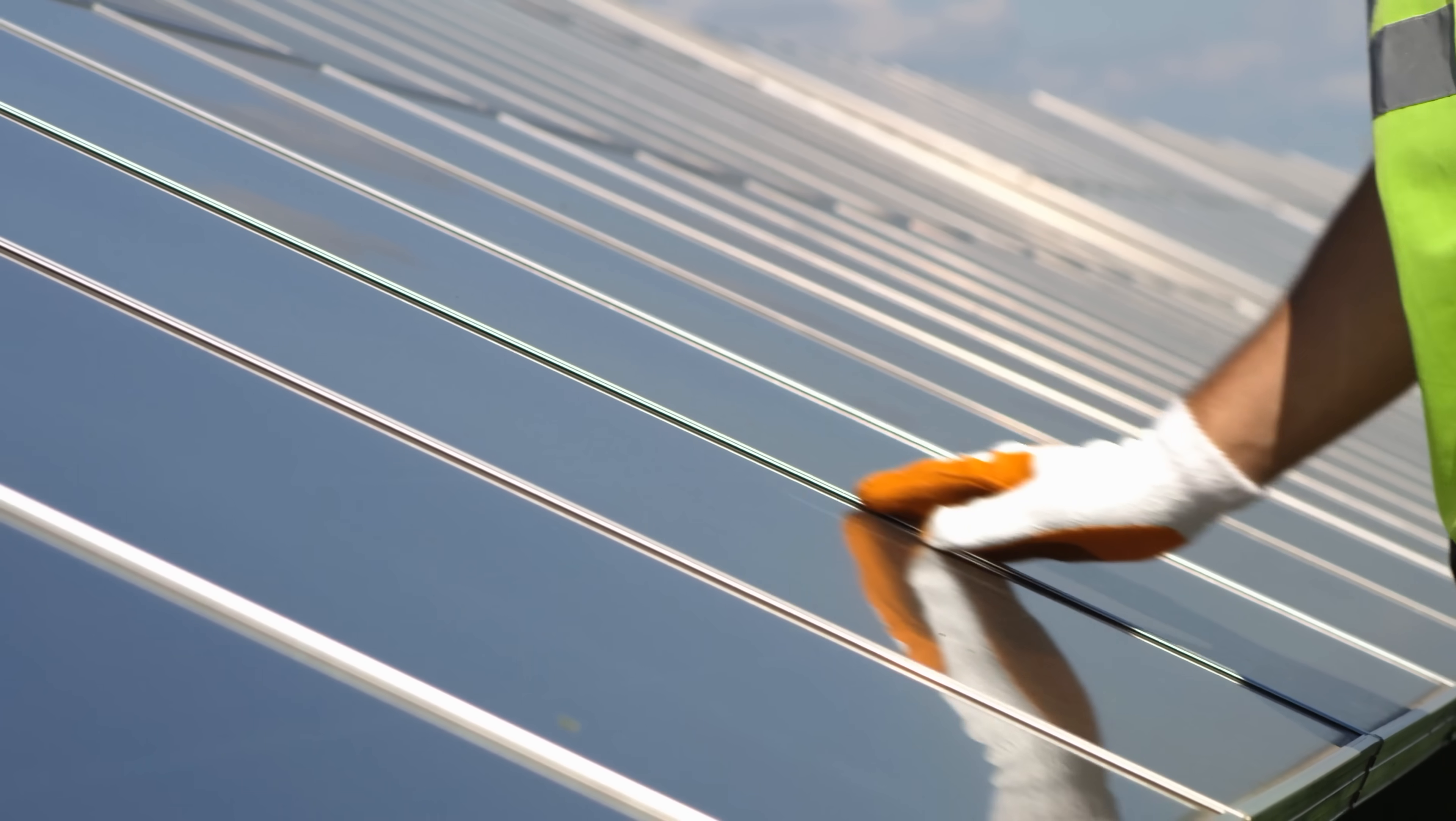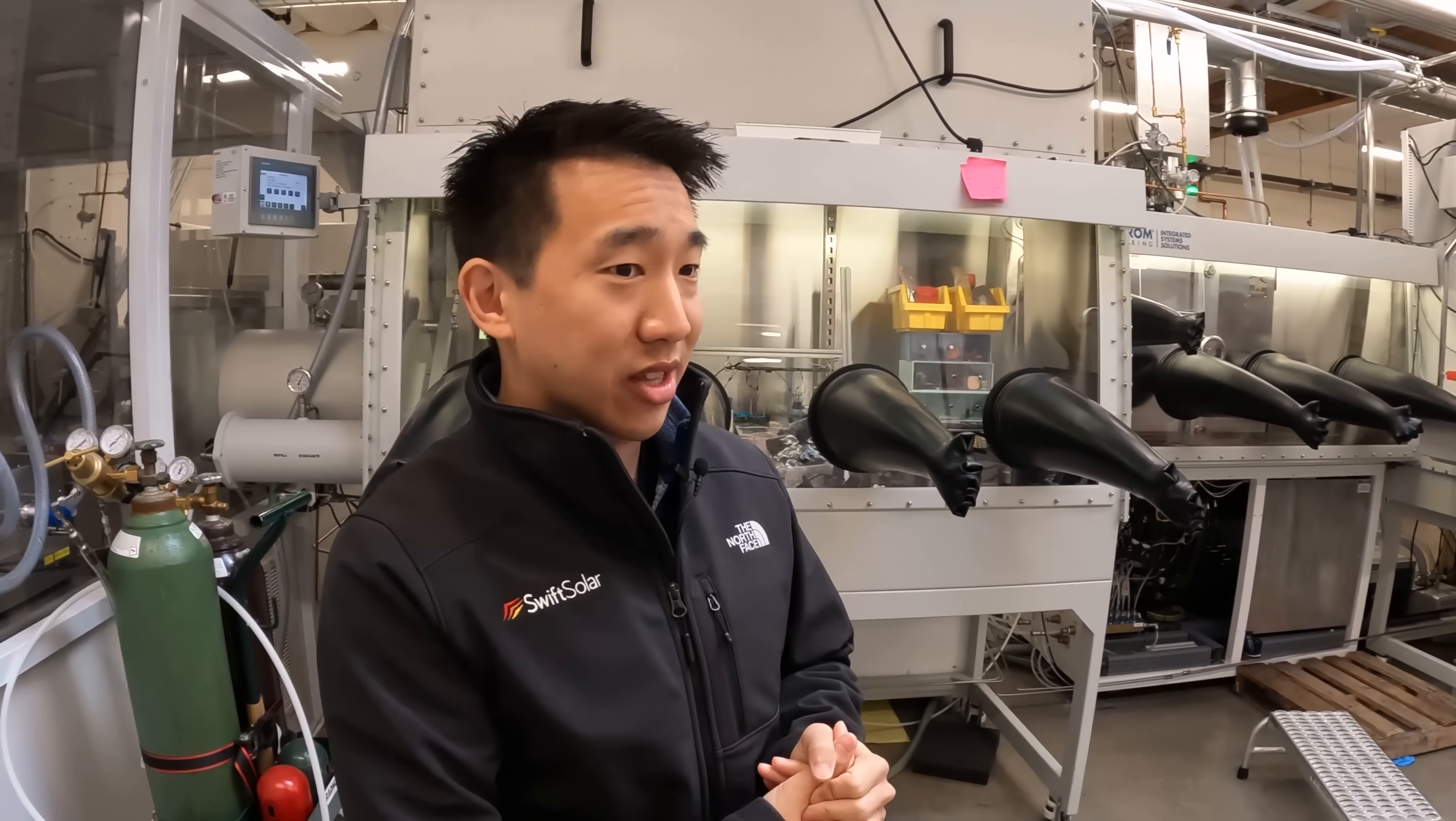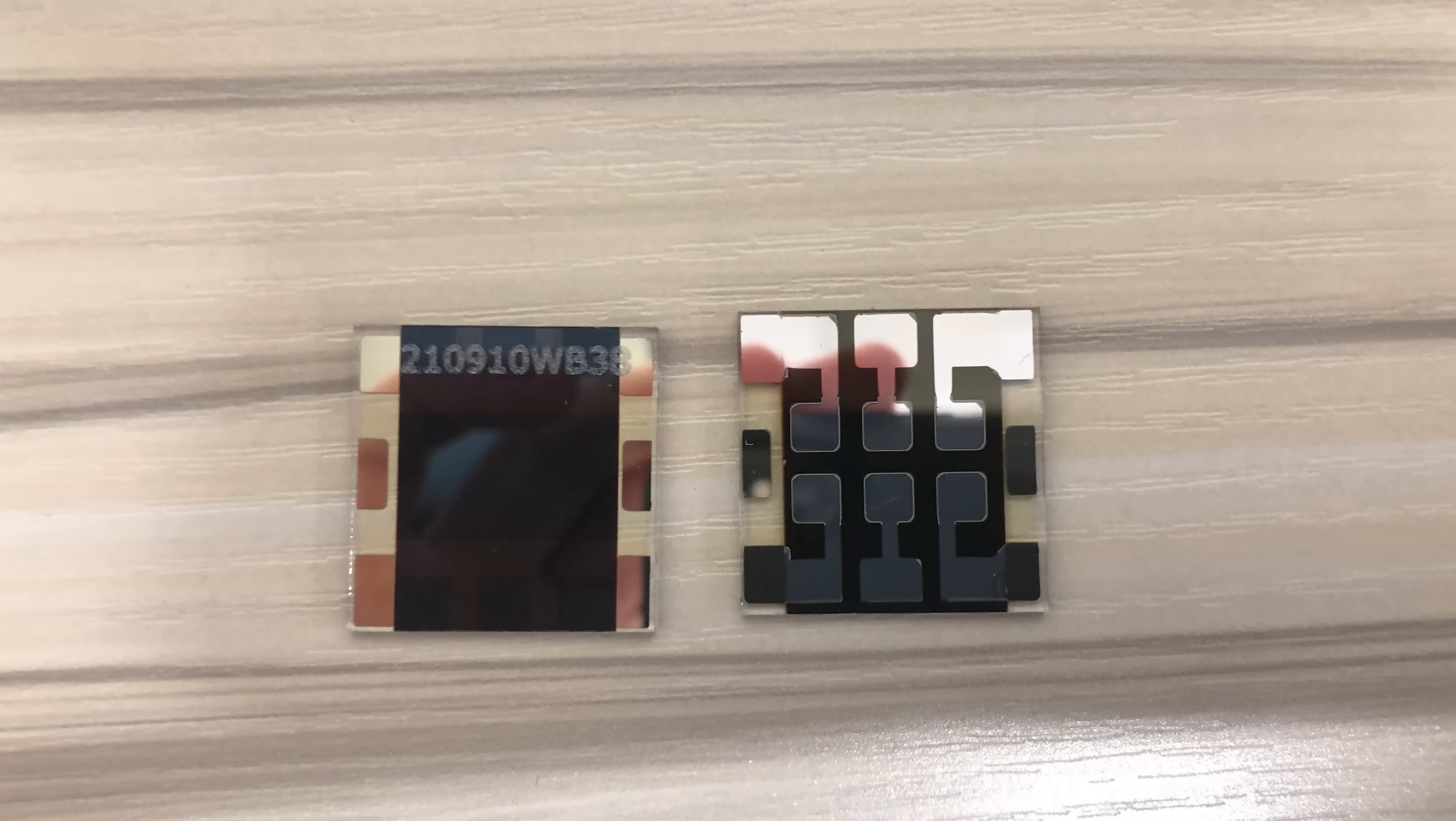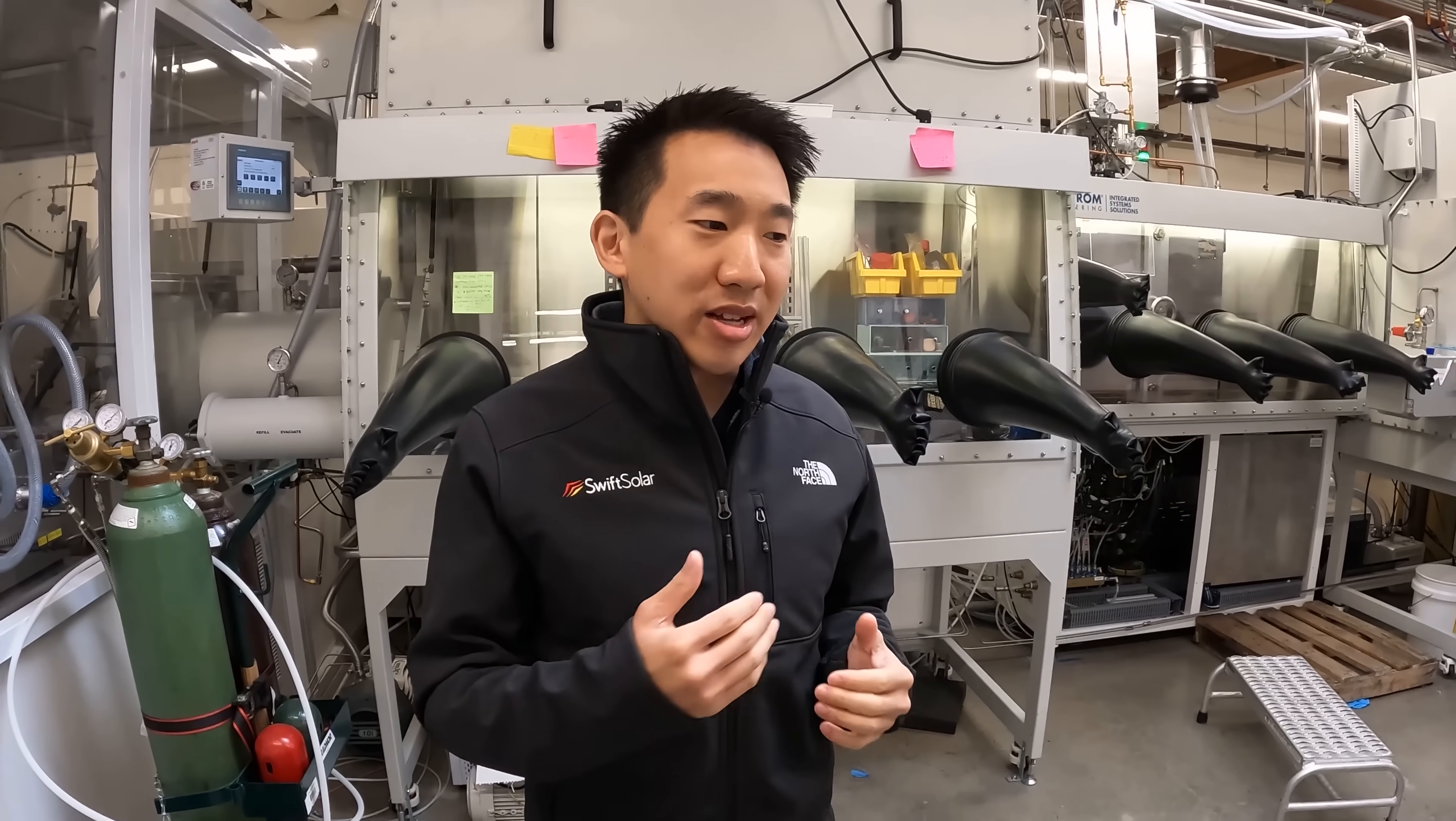So what exactly are the challenges that are preventing perovskites from dominating the solar energy landscape? We've spent a lot of time in this lab working on the challenges of developing this technology to a point where it's ready for production. And for scale up, there's things like stability, which is probably the core problem for perovskites, is how do you make these cells last effectively for years in the field under high temperatures? Car roof might get up to 80 degrees Celsius or more on a hot day.